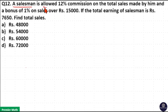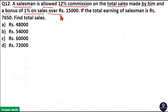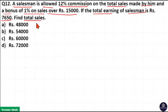A salesman is allowed 12% commission on the total sales made by him and a bonus of 1% on sales over ₹15,000. If the total earning of the salesman is ₹7,650, find total sales.